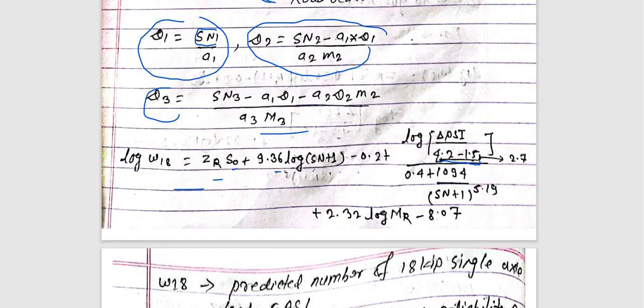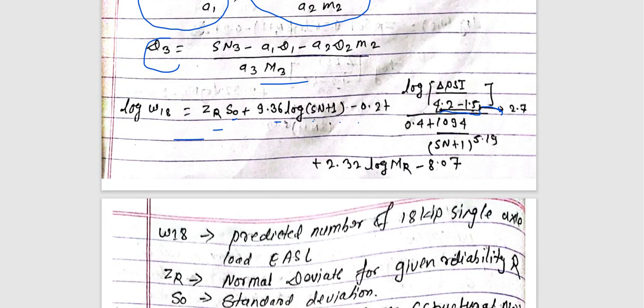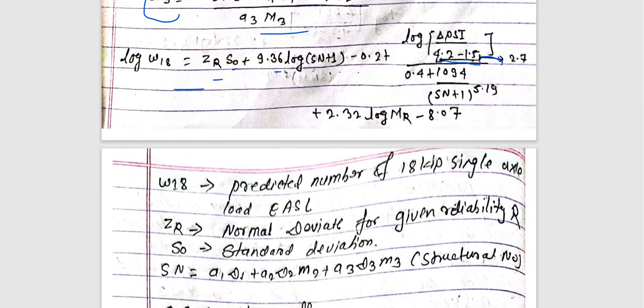In the formula we have 4.2 minus 1.5 terms. We can write 2.7 directly. The formula also uses 0.40995. W18 is the predicted number of 18-kip single axle loads, which equals the ESAL value.